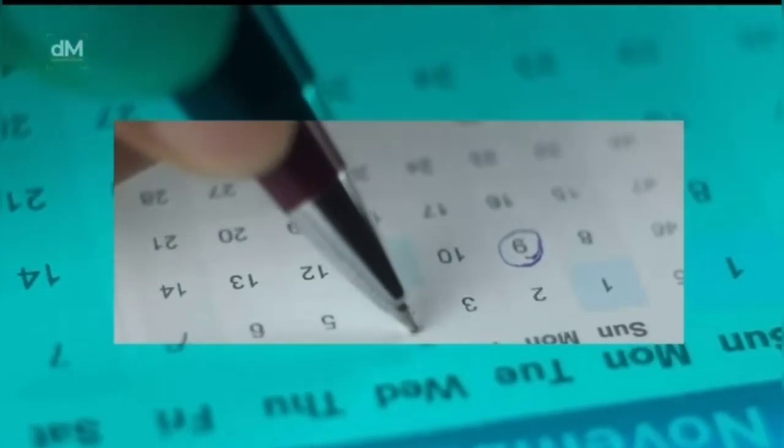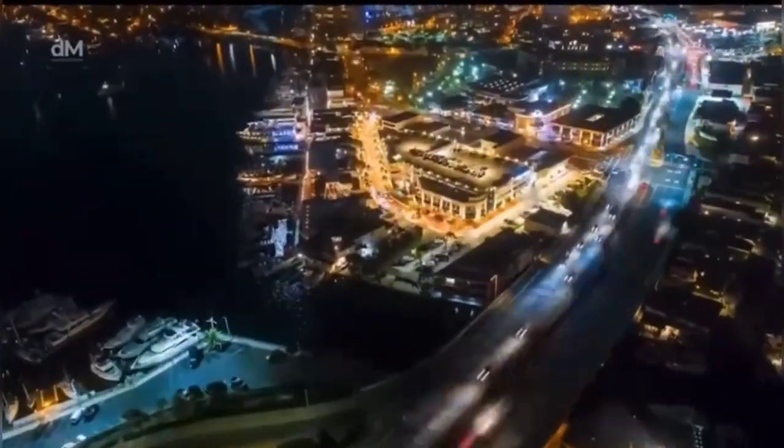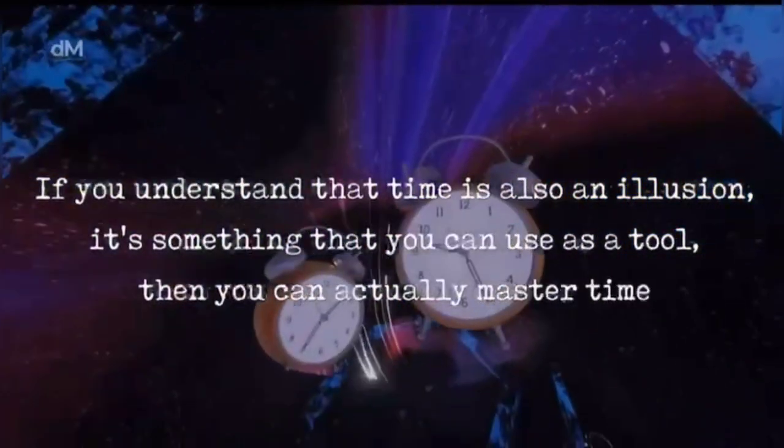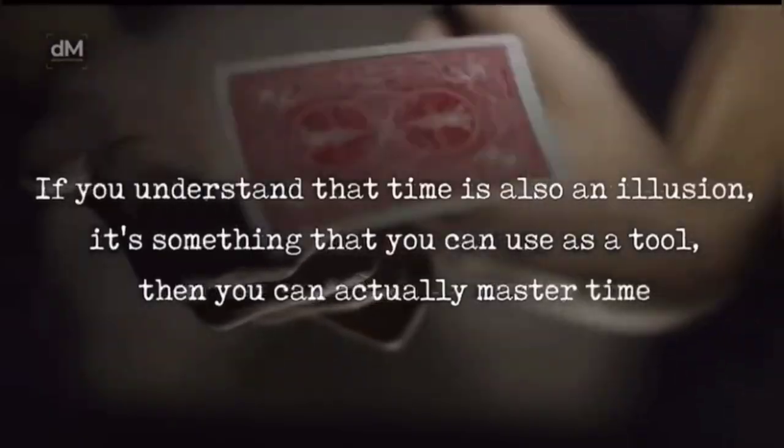We organize our years and weeks, what we're going to do, when we're going to meet up with somebody, and everything else. We have this ability to coordinate and collaborate with each other. However, if you understand that time is also an illusion, it's something that you can use as a tool. If you also understand it's an illusion, then you can actually master time and maximize what you're doing on this planet.